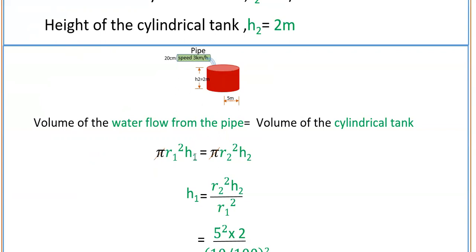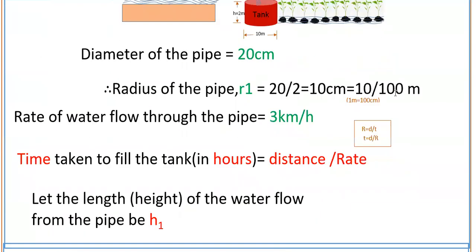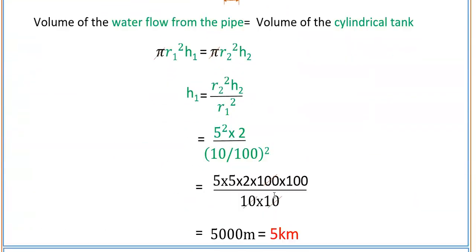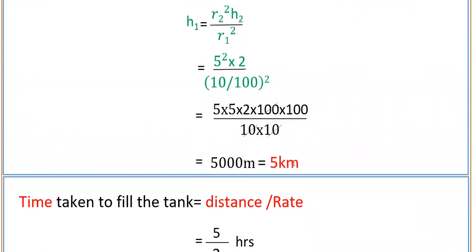Volume of the cylindrical tank is equal to the volume of water flow from the pipe. Writing: π·r1²·h1 — this water flow is also in the form of a cylinder — so π·r1²·h1 = π·r2²·h2. We have to find h1 first. So h1 is equal to r2²·h2 divided by r1², where r2 and h2 are measurements of the cylindrical tank. That is: 5 squared times 2, divided by (10/100) squared. Calculating this gives 5000 meters, that is 5 kilometers.